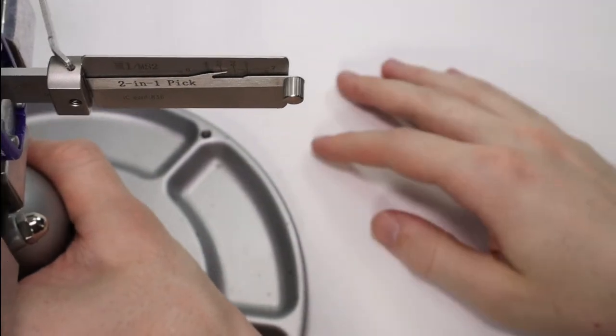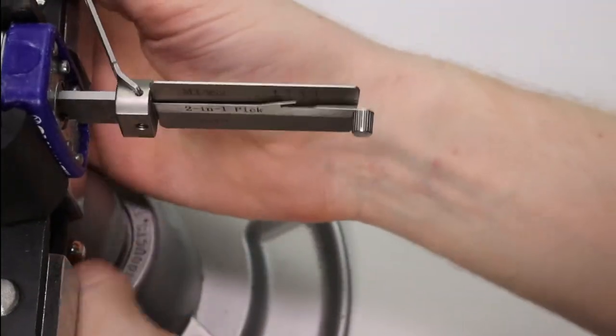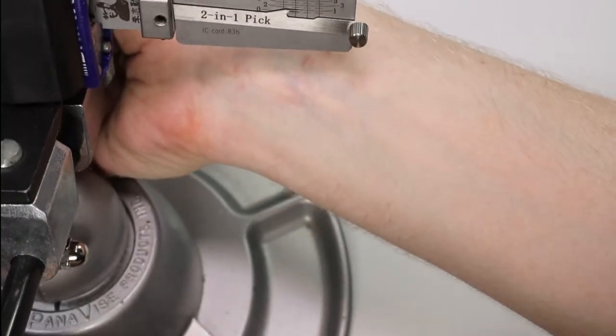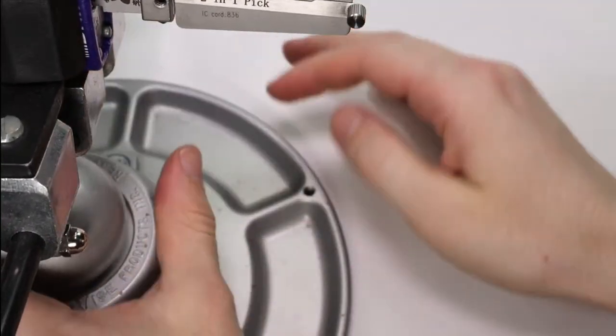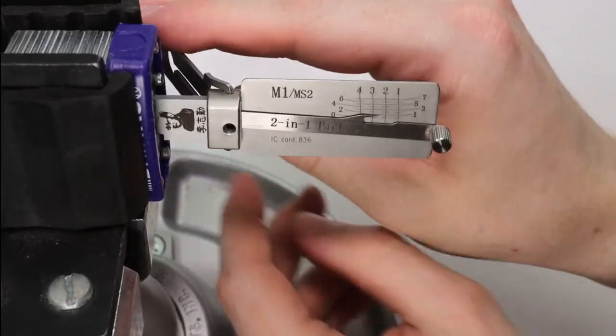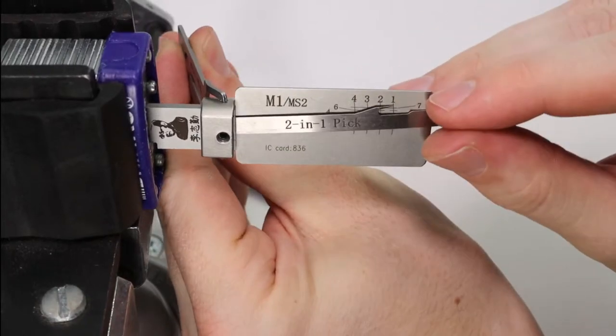But we're going to zoom in a little bit here. I'm going to adjust our vise so we can see what we're doing. And then we're going to move this tool back just a smidge. And what I'm going to do is I'm going to do some clockwise tension. I'm going to start off with 1.